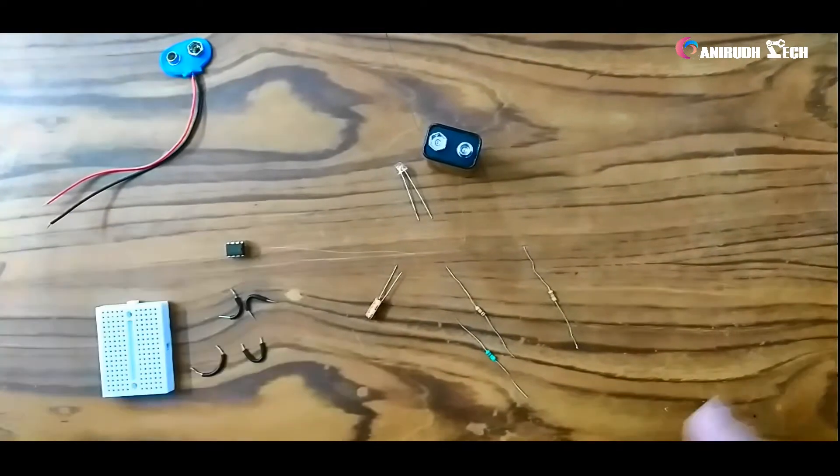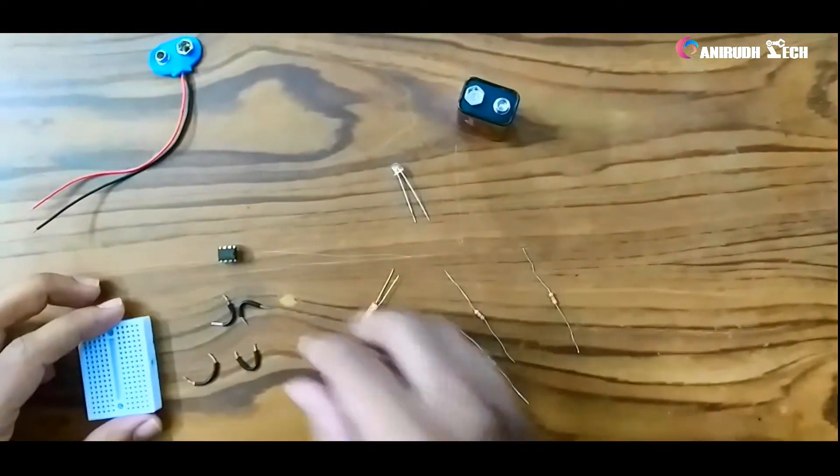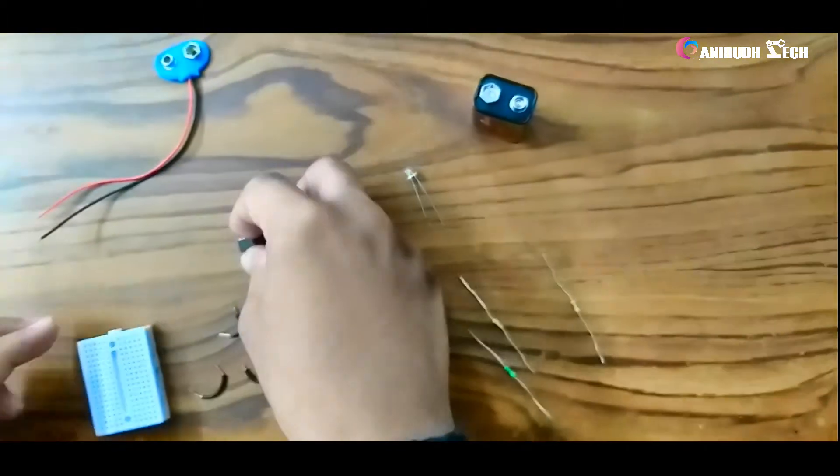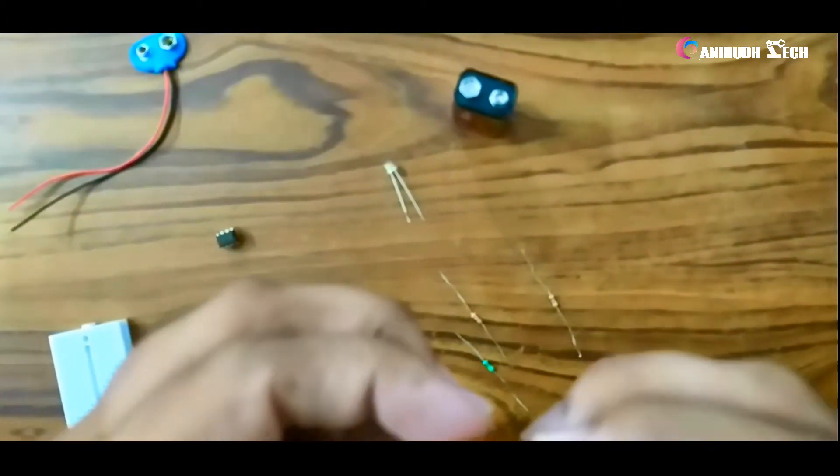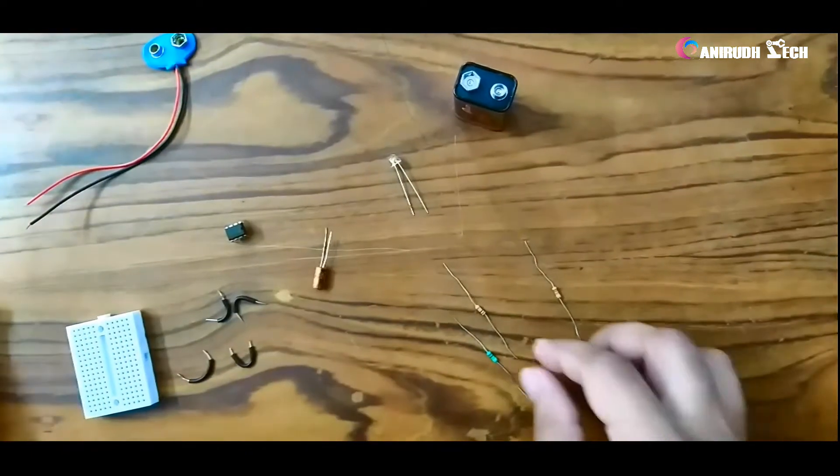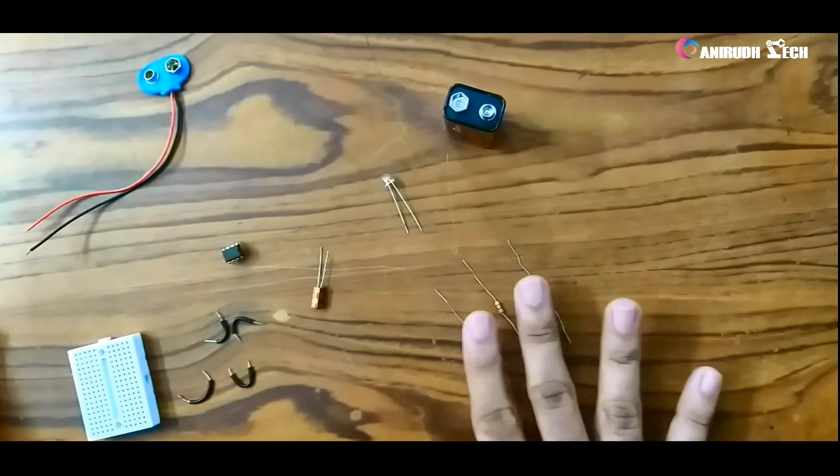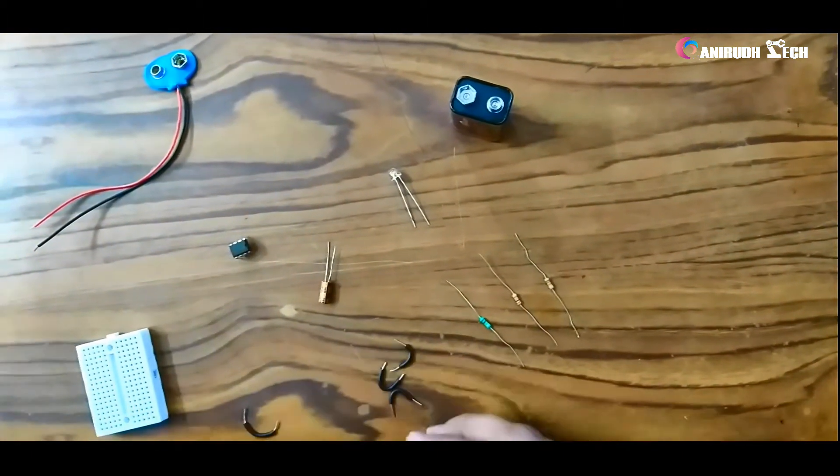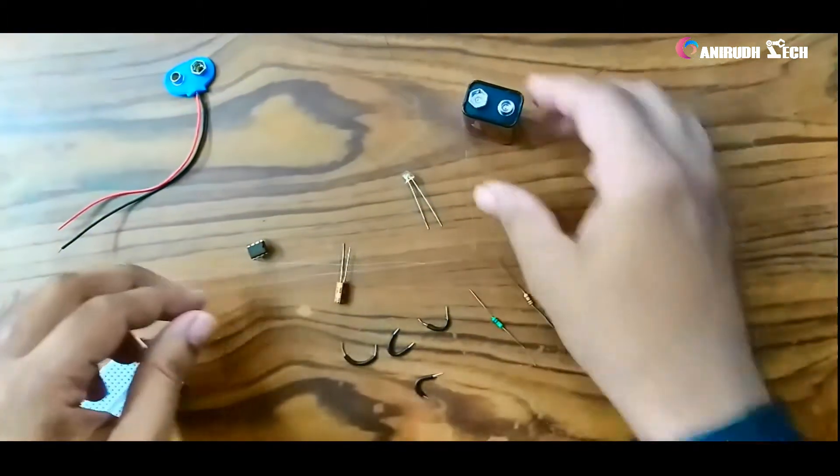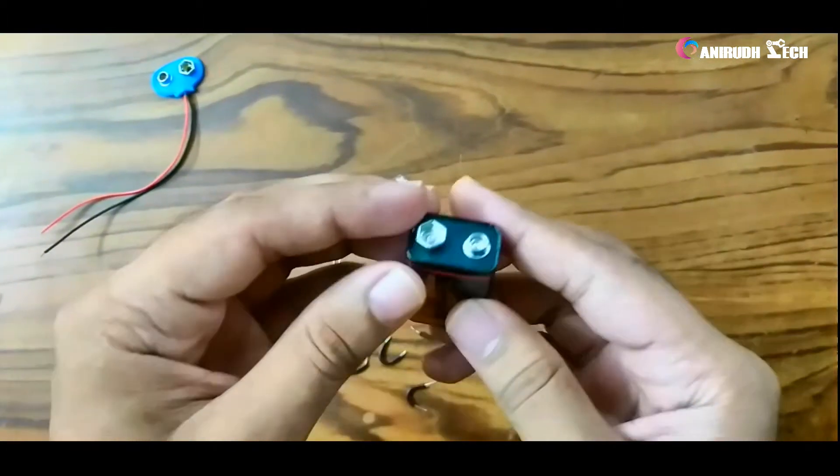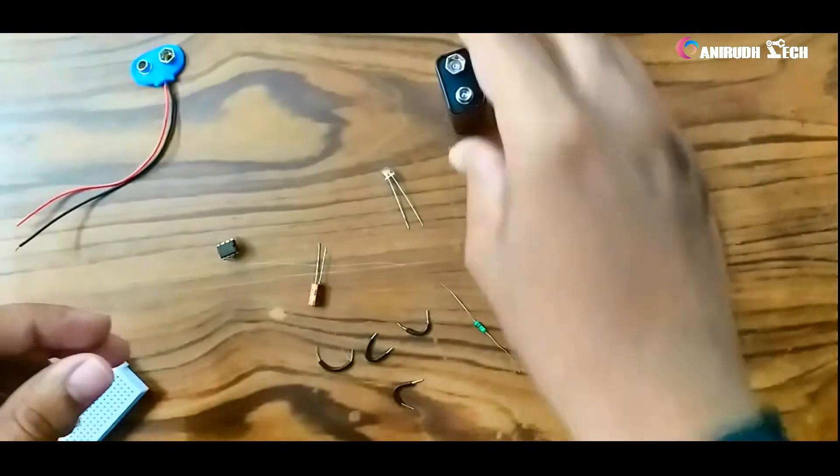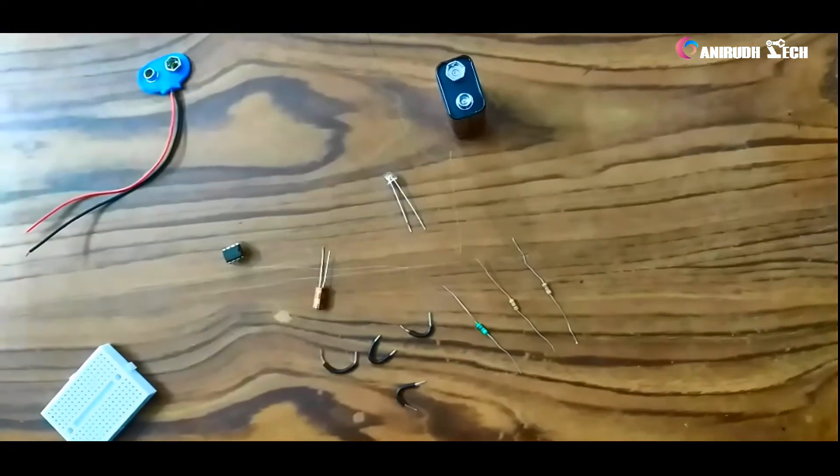These are all the components needed for our circuit. First and foremost, our 555 IC, then a 10µF capacitor, and here are our three resistors, some jumper wires, and a breadboard. Also, for powering, I am using here a 9V battery, but you can use 5 to 12V.